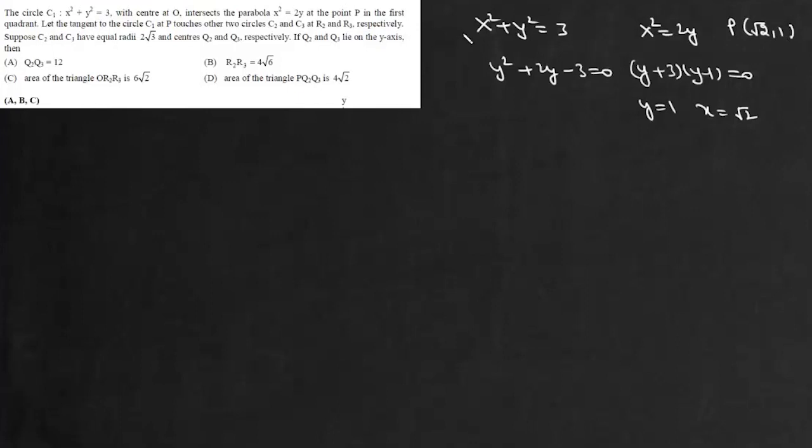Now we will draw the tangent to circle C₁ at point P and it will be given by √2x + y = 3. So that is the equation of this tangent.